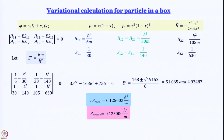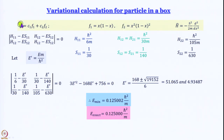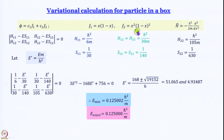We will come back to particle in a box with a little bit of a twist when we talk about orthonormal functions. Let us quickly recap what we learned in the previous module about the variational calculation we performed for particle in a box. There we had represented the wave function as c_1 f_1 plus c_2 f_2, where f_1 was x(1 - x) and f_2 was x²(1 - x)².